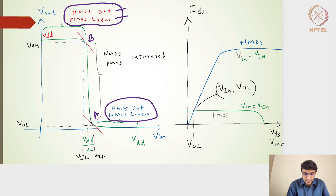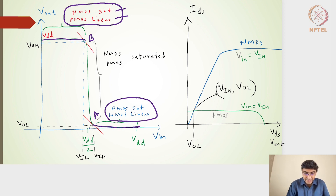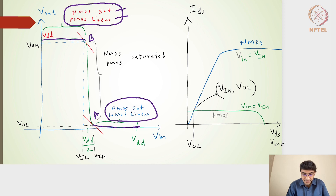Point B is actually closer to VDD volts, and this particular region turns out to be closer to 0 volts. The transistor operating regions are specified: NMOS in saturation and PMOS in linear for one region; in the other case, PMOS is in saturation and NMOS is in linear.